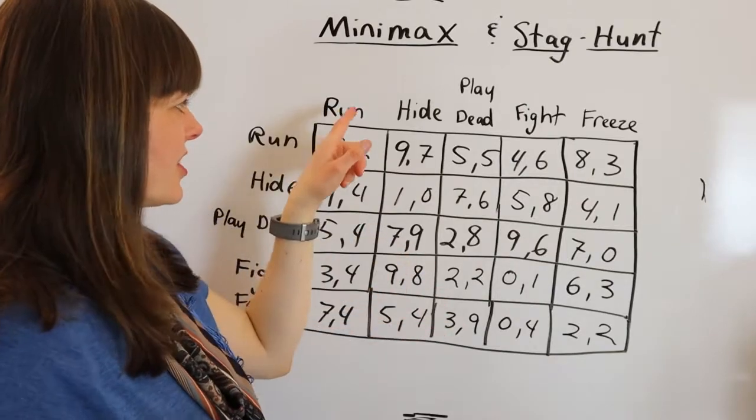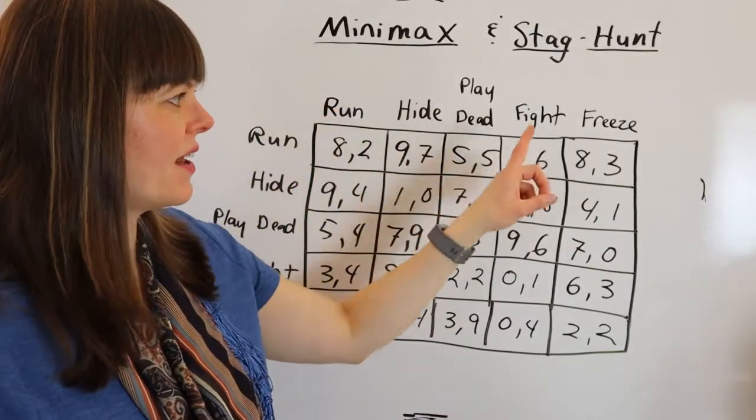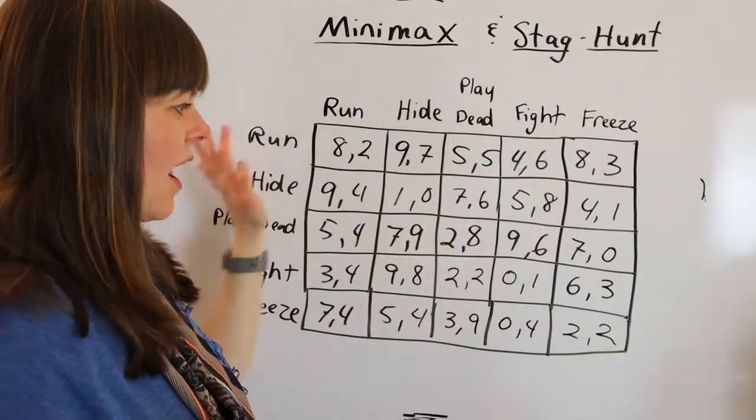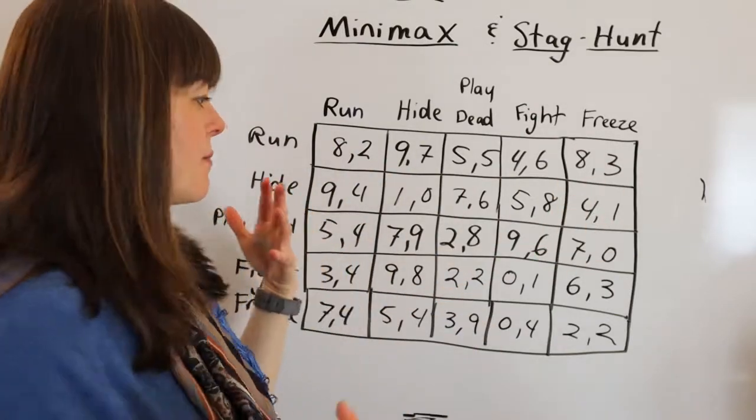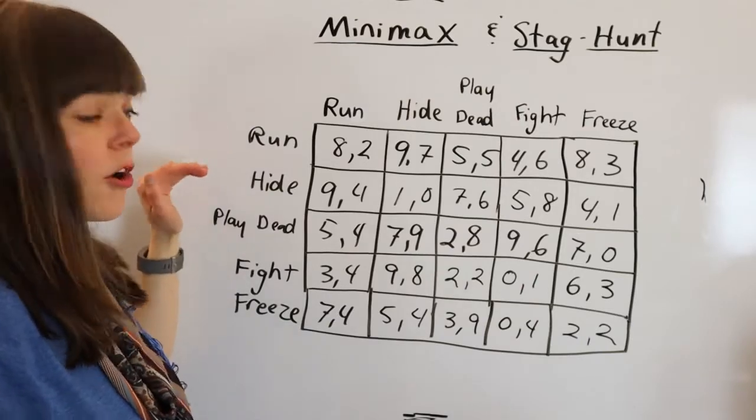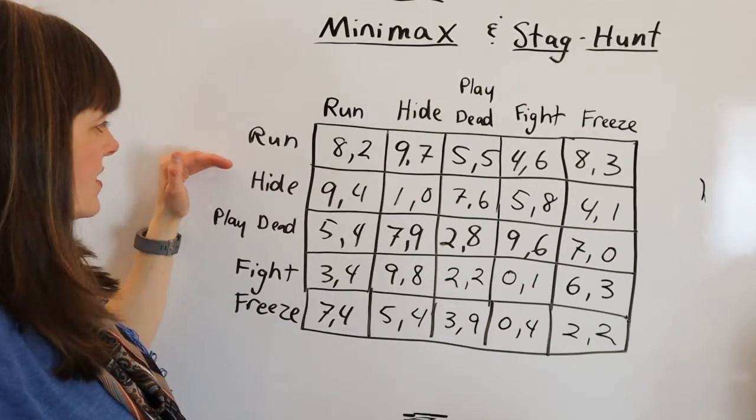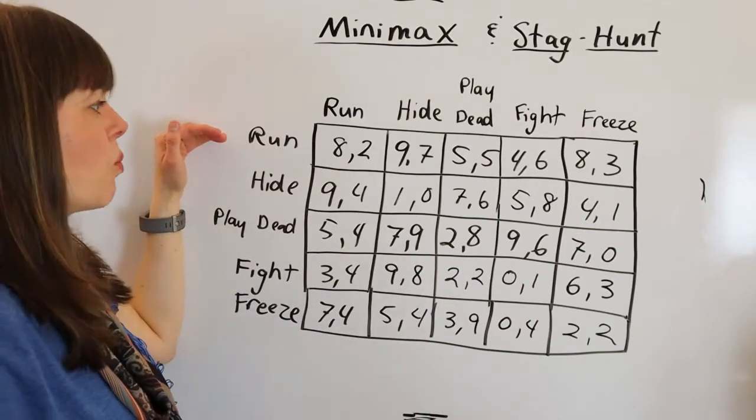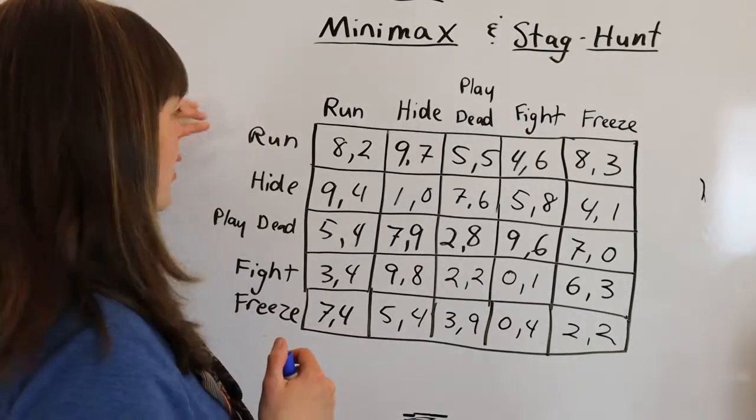They each have five strategies: run, hide, play dead, fight, or freeze. And I've just filled the table in with some payoffs. And the approach here is for each player to look at each of their own strategies and to say, if I play this strategy, what is the worst possible thing that could happen?